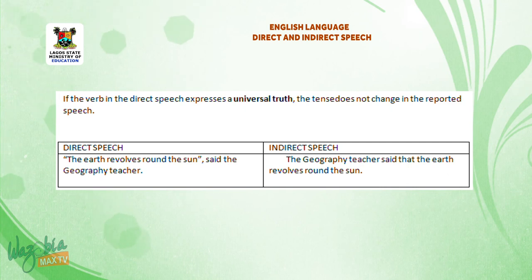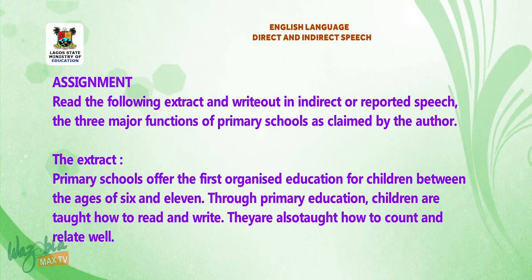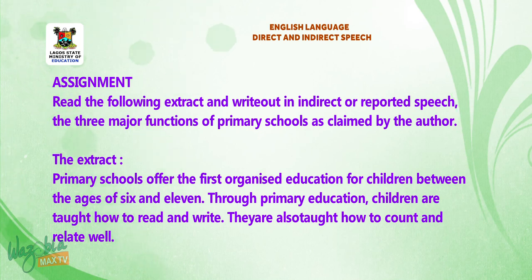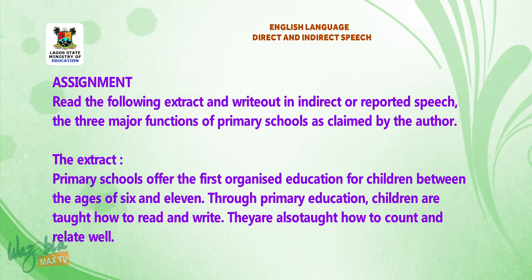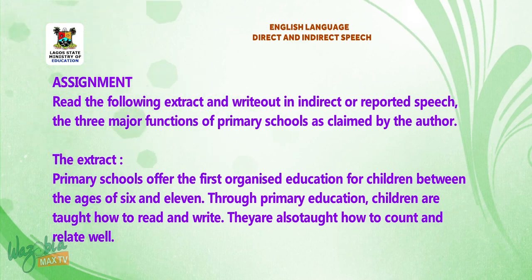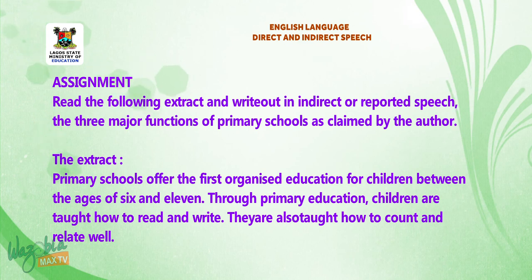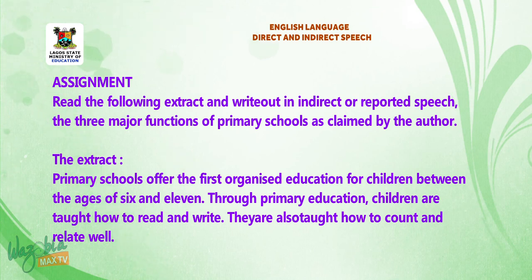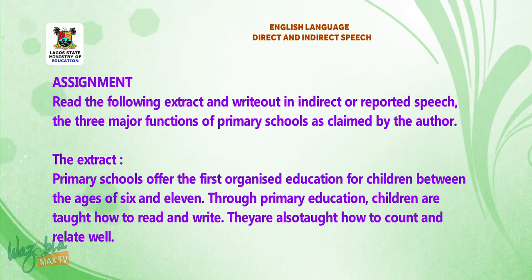This is all we can take for today. Please take down the following assignment: Read the following extracts and write out in indirect or reported speech the three major functions of primary schools as written or claimed by the author. Primary schools offer the first organized education for children between the ages of 6 and 11. Through primary education, children are taught how to read and write. They are also taught how to count and relate well. Write three functions of primary schools as claimed by the author in indirect or reported speech.